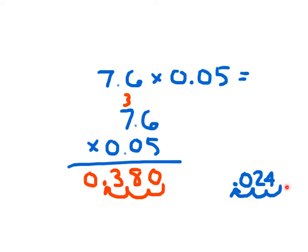And that's all you need to know about multiplying decimals with zeros.